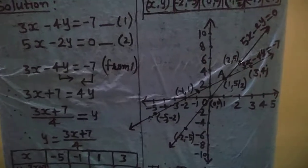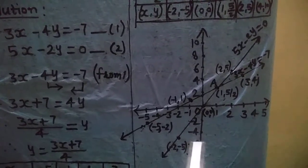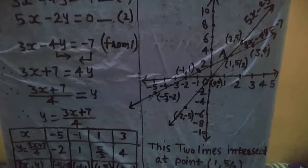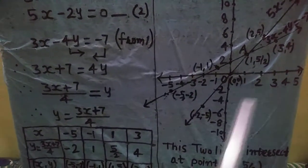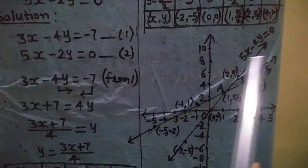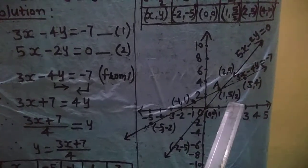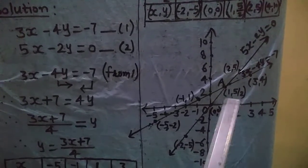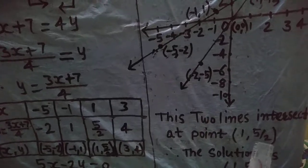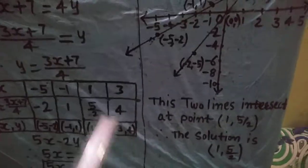Let us plot the graph. Take the x-axis and y-axis and the whole coordinate system. Represent the graph using the tables. We get one line for 3x - 4y = -7 and another line for 5x - 2y = 0. Both lines intersect each other at the point (1, 5/2). Thus, the solution is x = 1, y = 5/2.